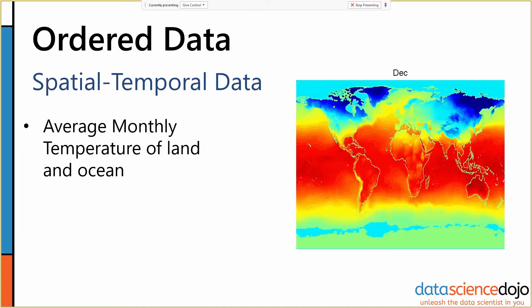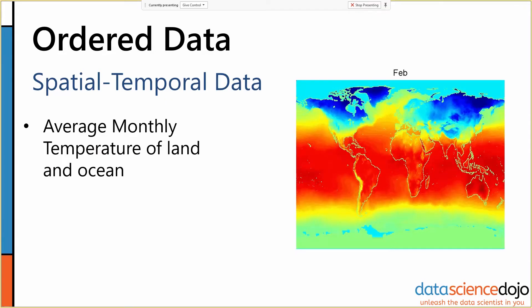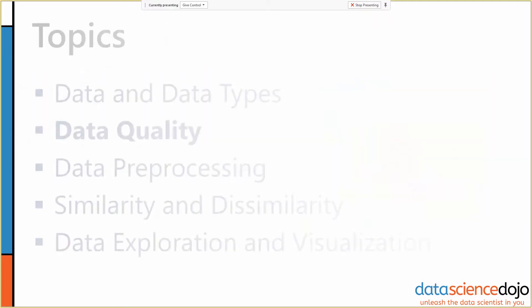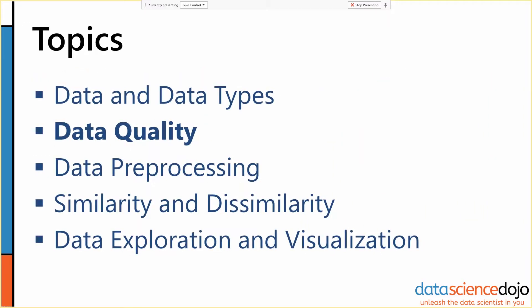Now we've got that basic definition — we understand what attributes are on data objects and the different types of them. We can move on to talking about data quality.